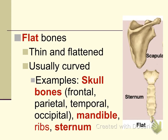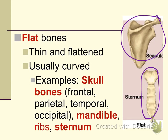Flat bones, as the name suggests, are flat in appearance. Examples of flat bones include the skull bones — frontal, parietal, temporal, and occipital — the mandible or lower jaw bone, the ribs, the sternum or breast bone, and also the scapula, which also belongs to the flat bone category.